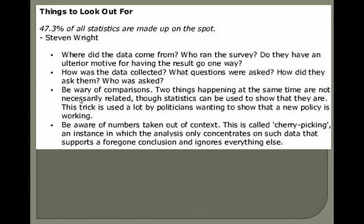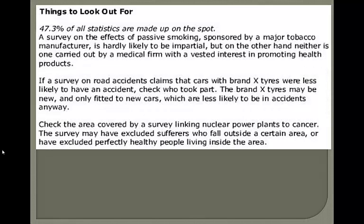This is a trick used by politicians wanting to show that a new policy is working. Be aware of numbers taken out of context — this is called cherry picking, where the analysis only concentrates on data that supports a foregone conclusion. For example, road accident studies involving a certain brand of tires often rig the results by putting new tires on new cars, when older cars are the ones more likely to be in an accident. Also check the area covered by a survey linking nuclear power plants to cancer — the survey may have excluded sufferers outside a certain area or healthy people living inside it.